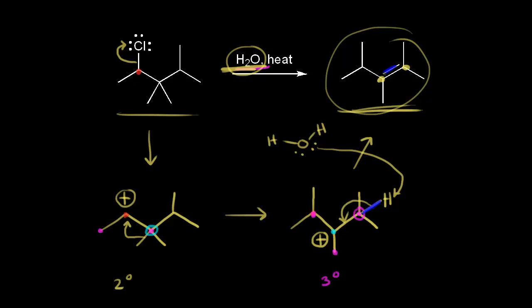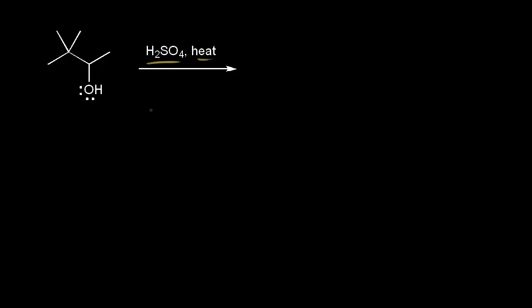Let's look at another E1 reaction — the goal is to draw all of the products from this elimination reaction. On the left we have an alcohol reacting with sulfuric acid with heating. From earlier videos, the first step when you have an alcohol is a proton transfer: the alcohol functions as a base, sulfuric acid donates a proton, and we protonate our alcohol. A lone pair of electrons on oxygen picks up the proton from sulfuric acid.